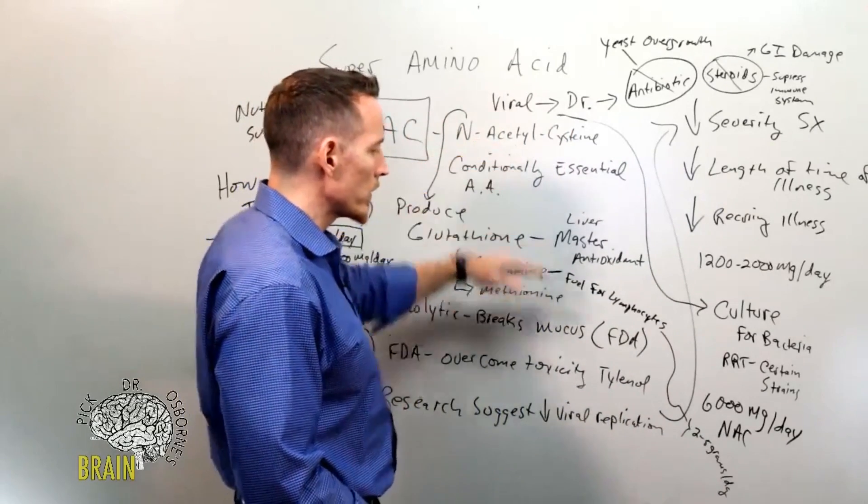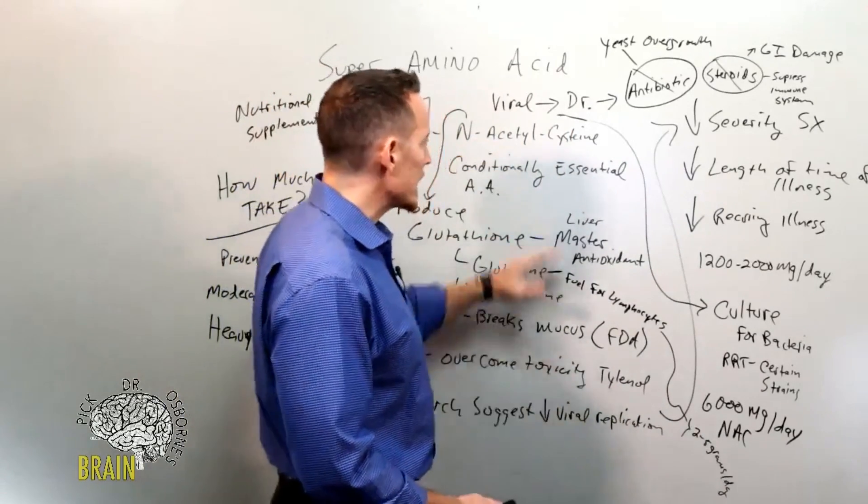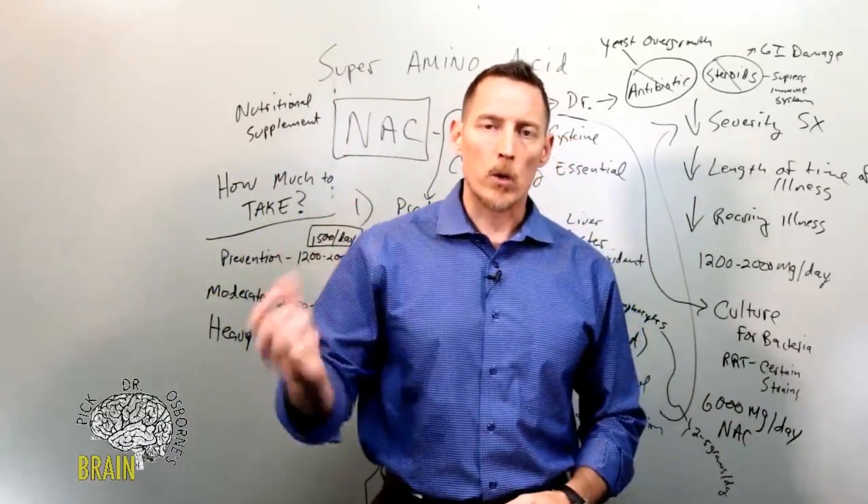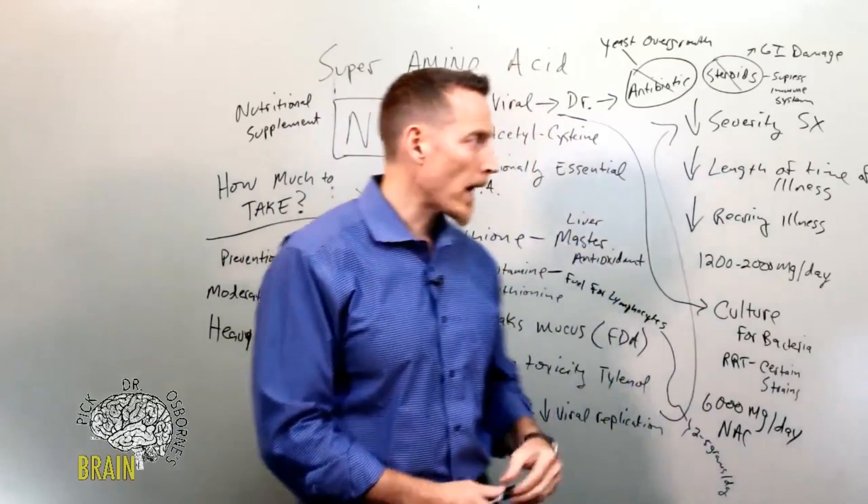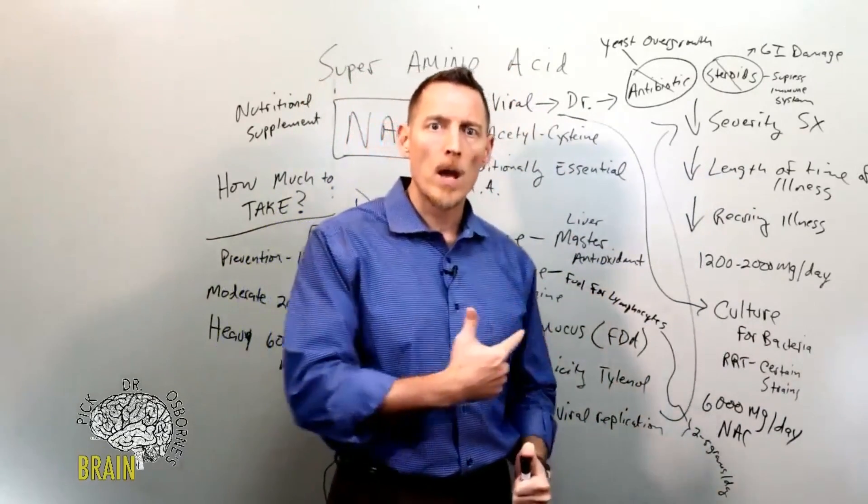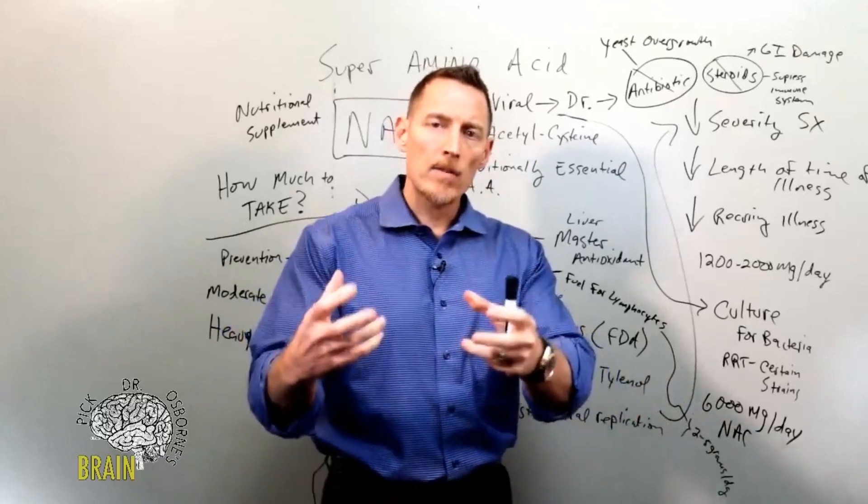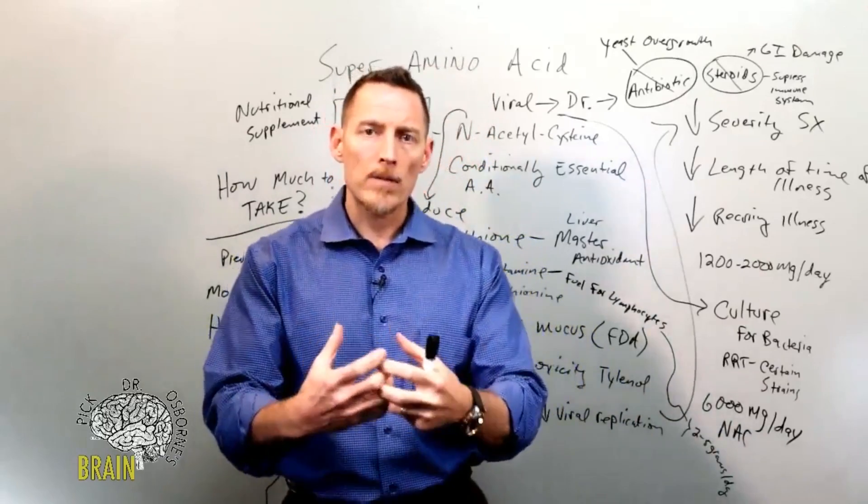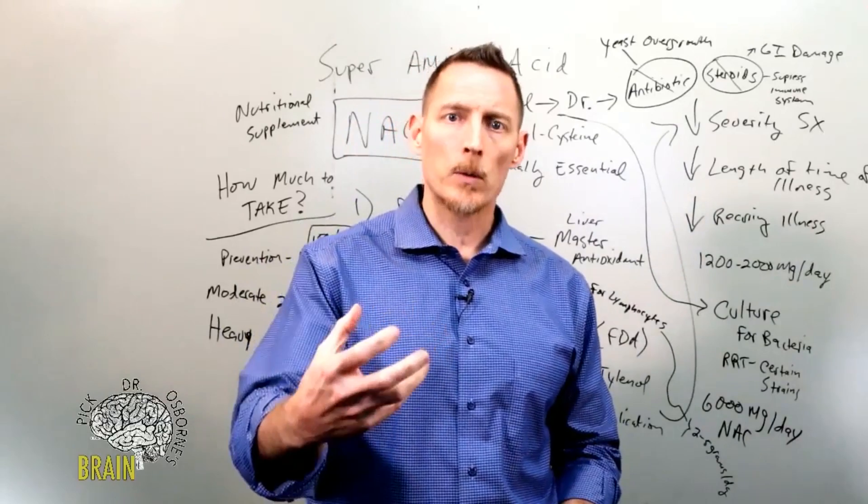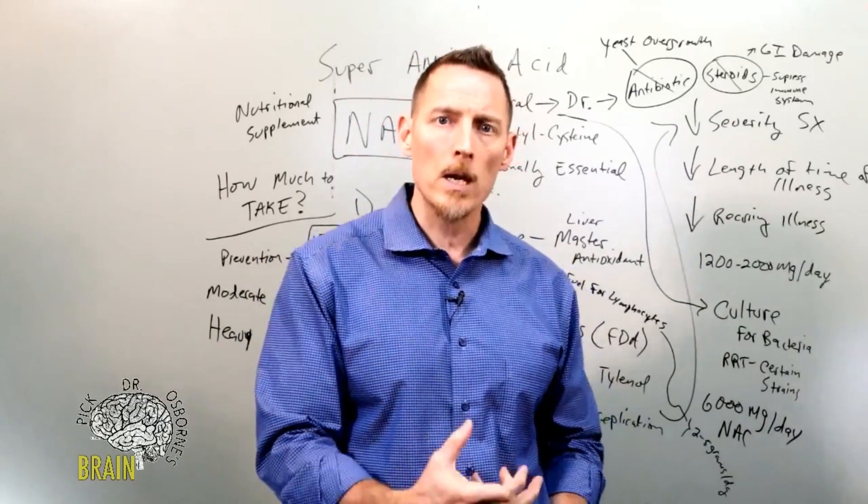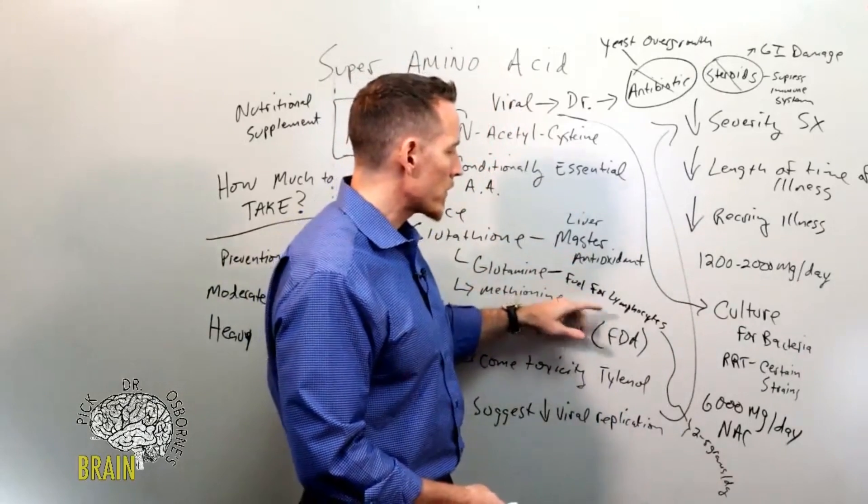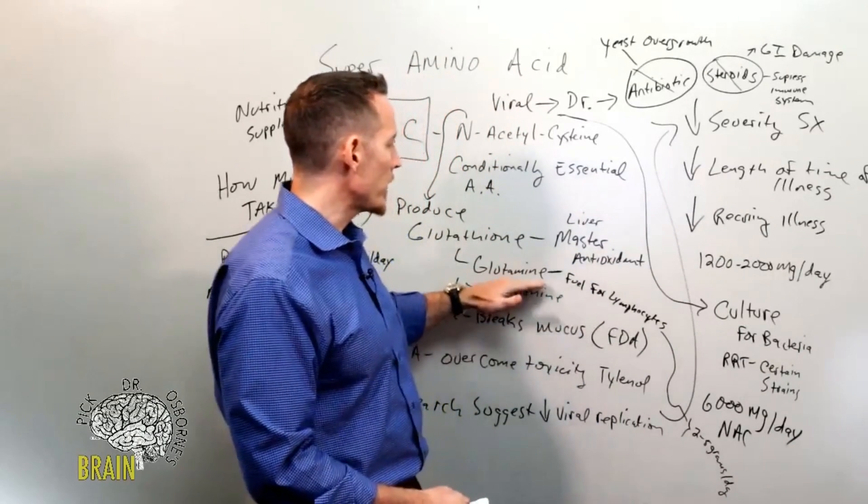It's important that when you're taking N-acetylcysteine or L-glutamine that you don't take them with a big hunk of meat or big hunk of protein. Here's why: these are amino acids. When you're taking them in free form, if you take them by eating a heavy piece of meat or protein meal, the amino acids from the proteins in that meal will compete for absorption with the N-acetylcysteine and the L-glutamine.